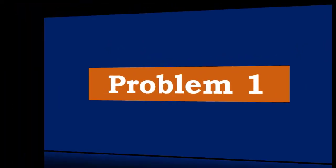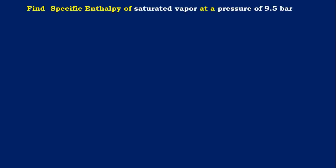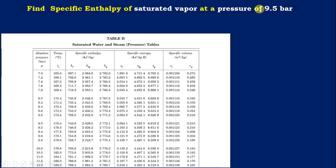Problem number 1: Find specific enthalpy of saturated vapour at a pressure of 9.5 bar. From this we can conclude that the saturated pressure steam table can be used, i.e., Table 2 — saturated water and steam pressure tables. What we need to find out is the enthalpy of saturated vapour, that is Hg, at a pressure of 9.5 bar, which is not available in the steam table. In such a scenario, we have to do interpolation.